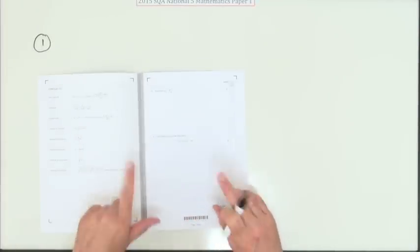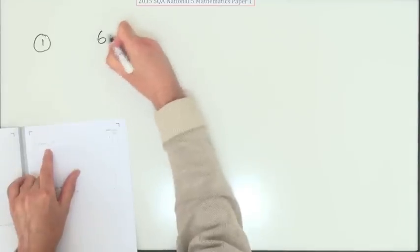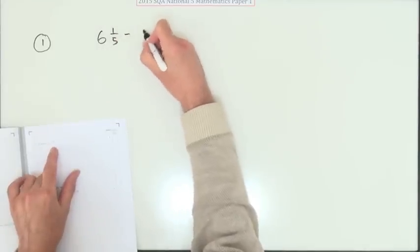Let's have a look at this then, this National 5 paper. Here we go, Paper 1, non-calculator. Number 1, two marks for evaluating this subtraction.